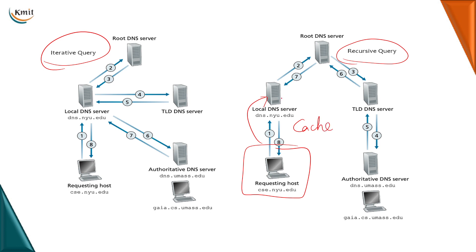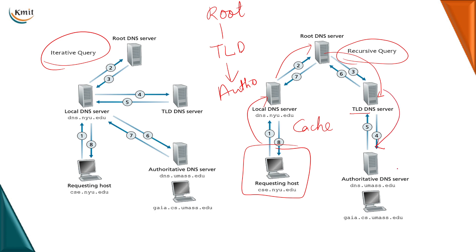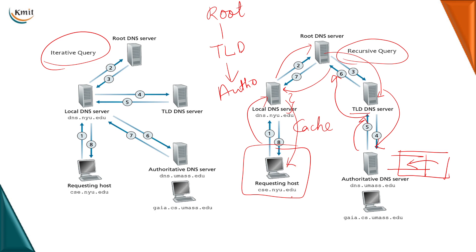In recursive resolution: if not in cache, the local DNS server contacts the root DNS server. The root DNS server recursively calls the top-level domain DNS server, which in turn calls the authoritative DNS server. The authoritative DNS server maintains the IP address for the given domain name and replies back. This IP address travels back through the chain - from authoritative to TLD to root DNS server to the local DNS server - and finally the resolver gives it back to the host that requested the IP address. This process is recursive resolution.